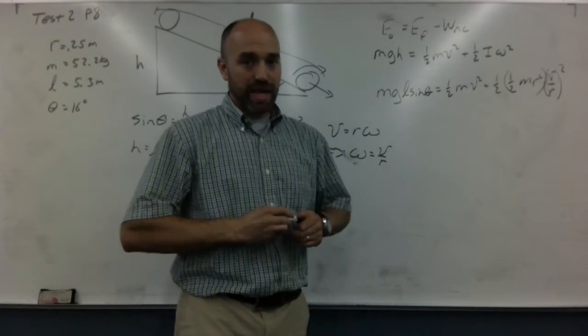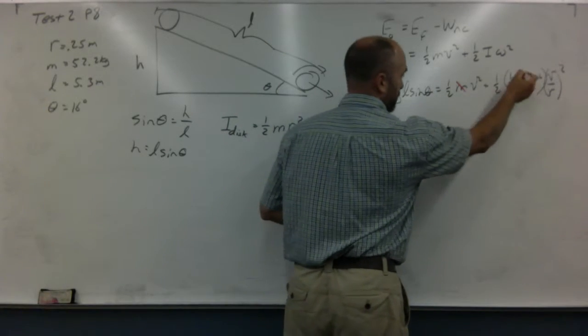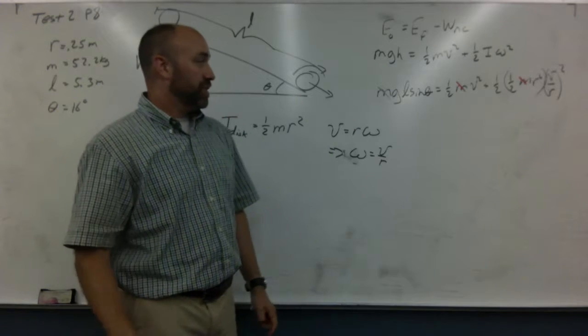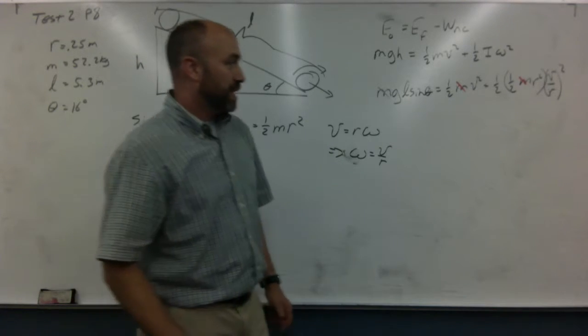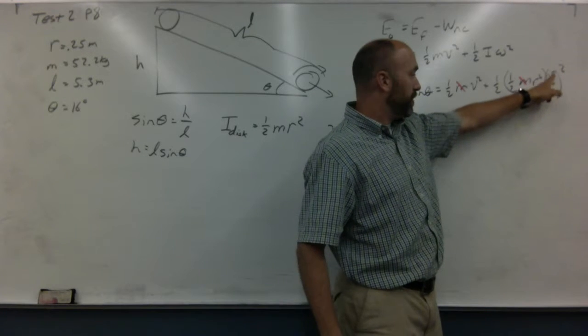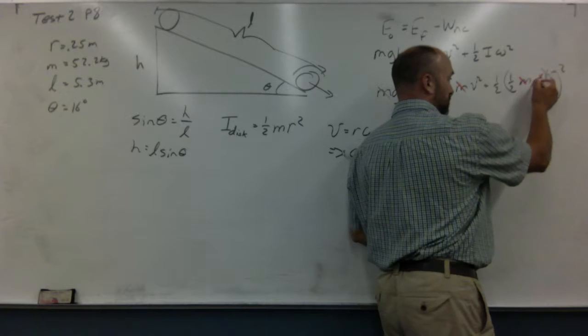So we've got this big long equation here. And a lot of things happen for us here. First of all, mass cancels out everywhere. So this doesn't matter if it's a little disk or a big disk. Doesn't matter. It behaves the same. Secondly, notice that this square here goes to both the v and the r. So this is an r squared downstairs and r squared upstairs. So that goes away there.